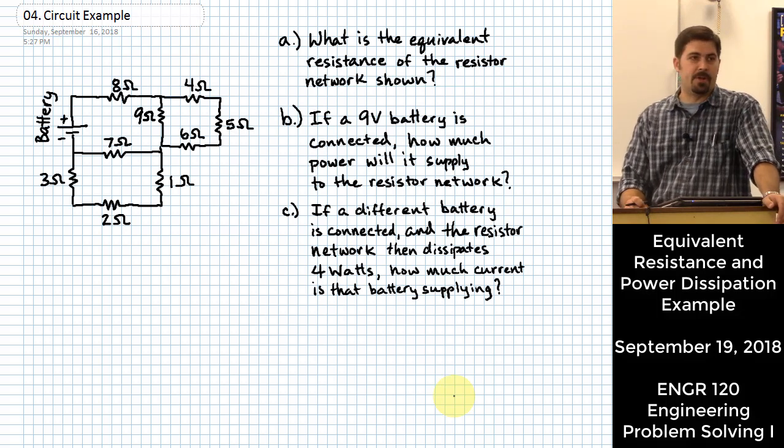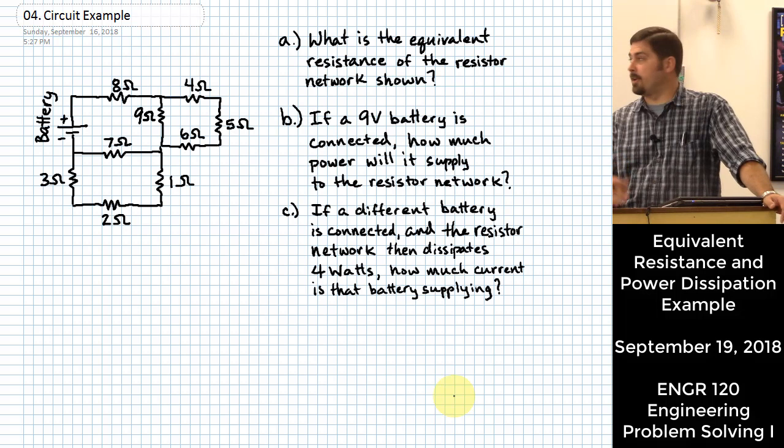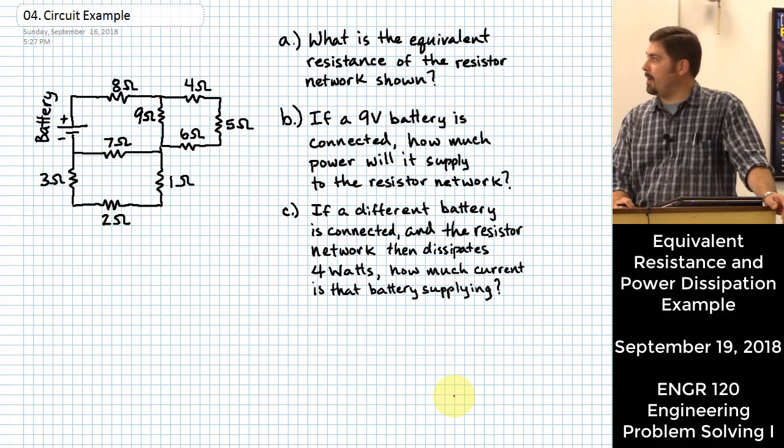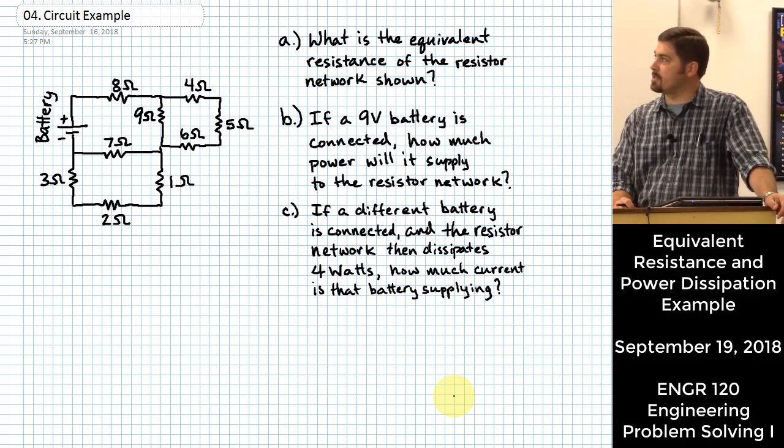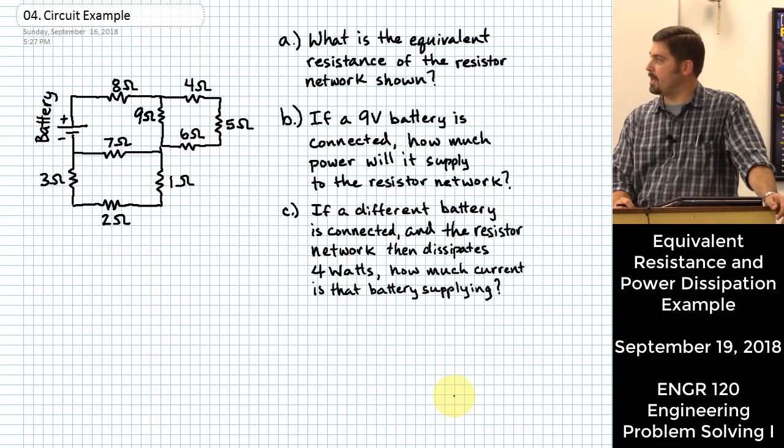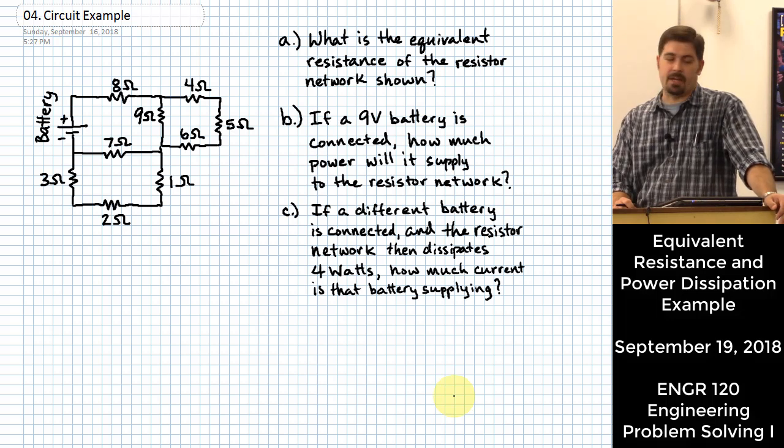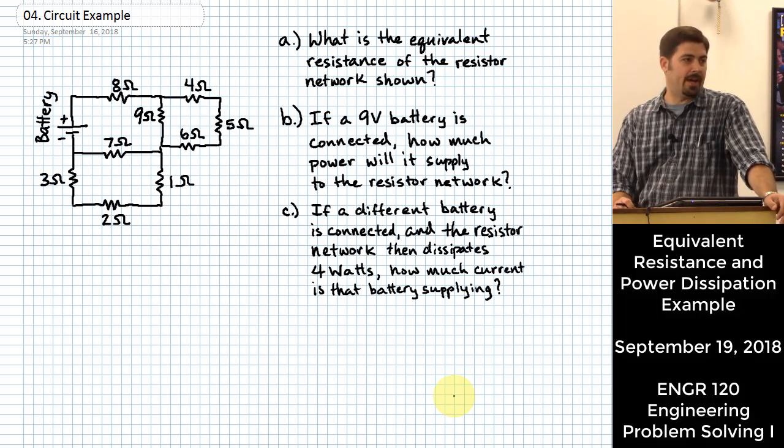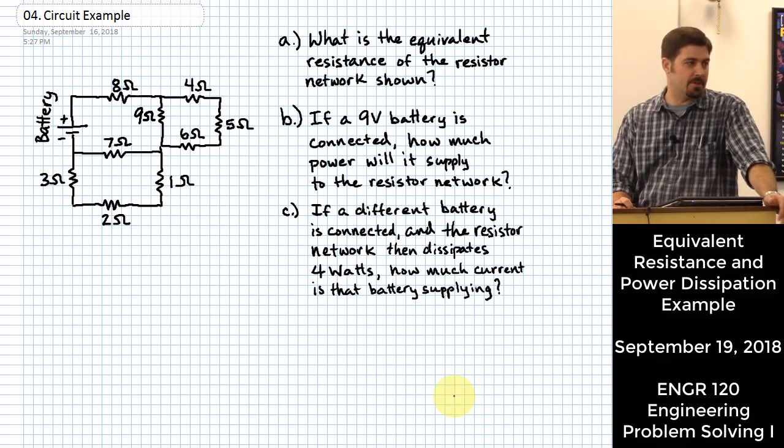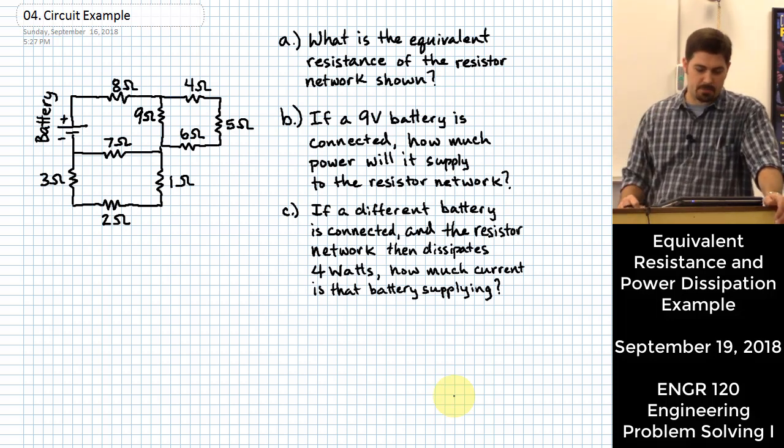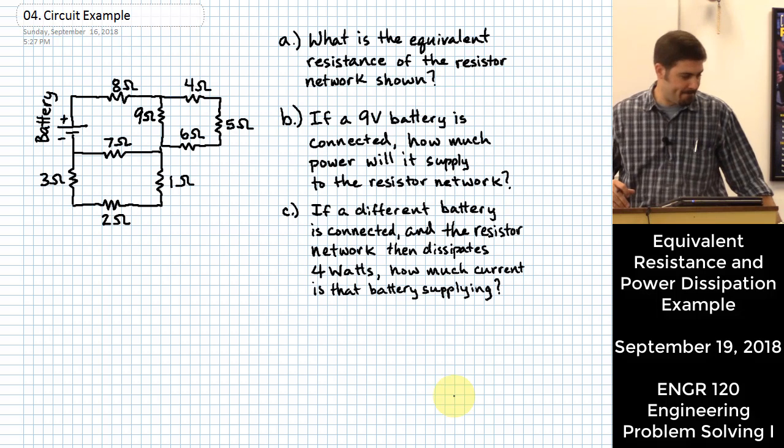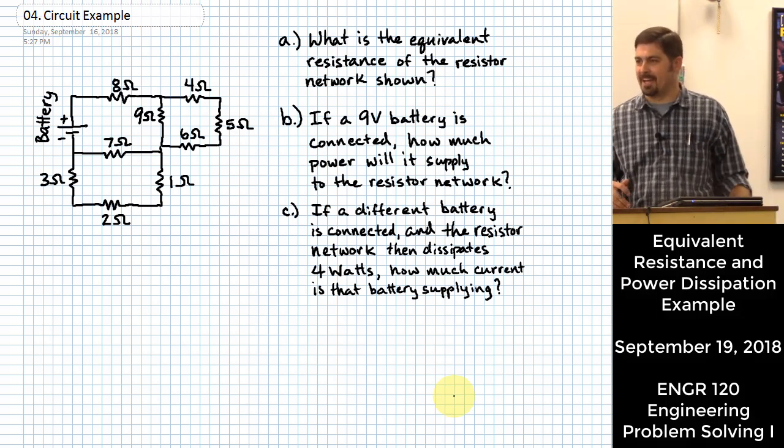Then think about another problem where if you took a different battery and you stuck it on there and somehow you knew that the entire resistor network was dissipating 4 watts, then how much current would that imply the battery is supplying to the network? So we're going to answer these three questions. We'll start with A.